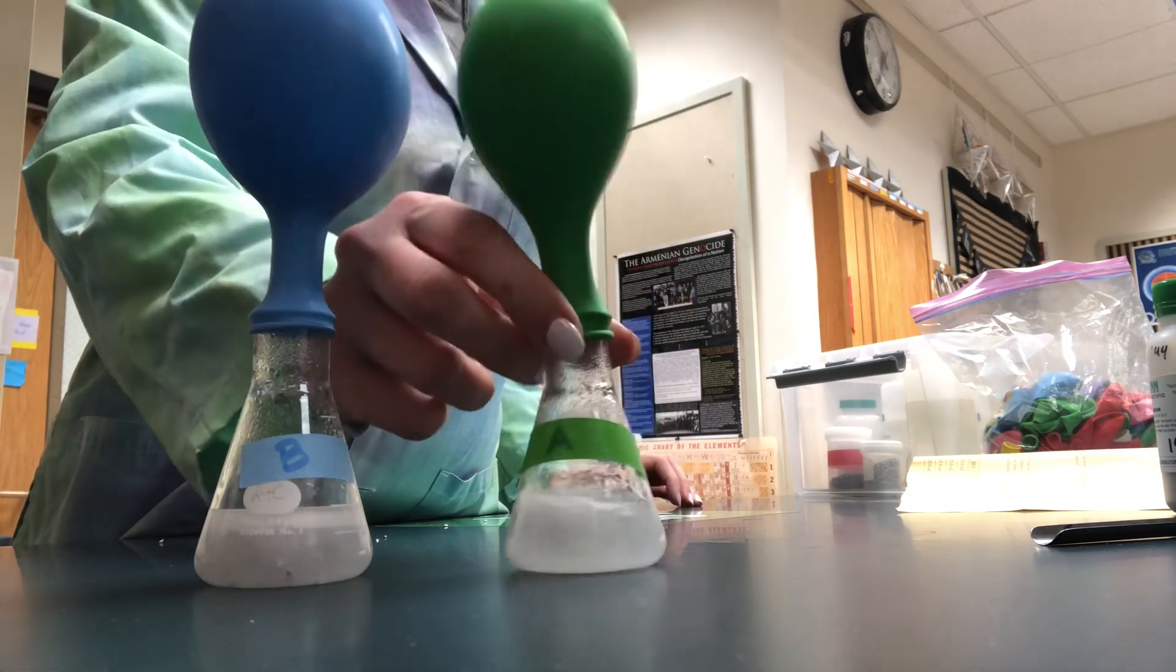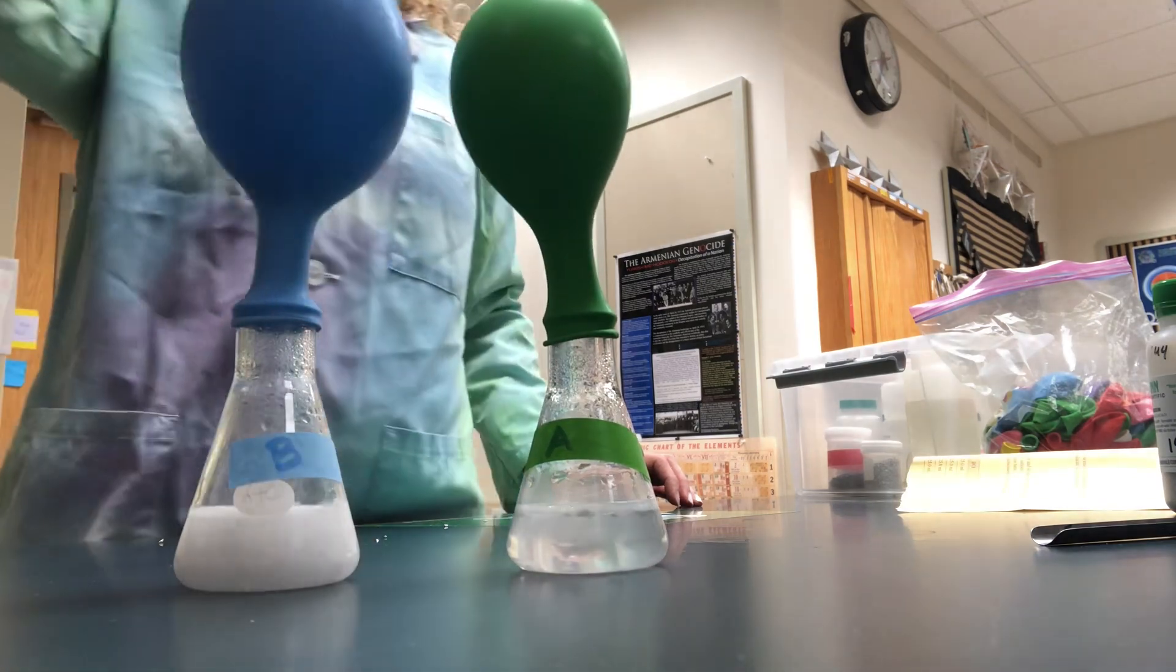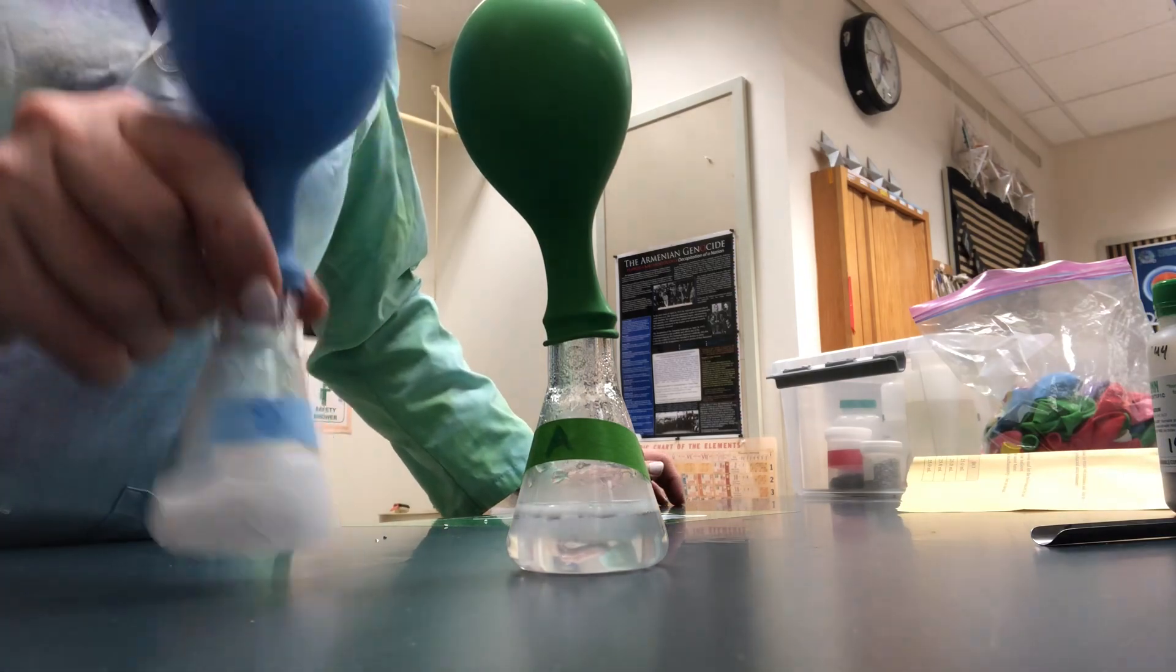Again, you can make the reaction go faster by stirring, mixing, making more of the hydrochloric acid come into contact with the magnesium metal at a faster rate.